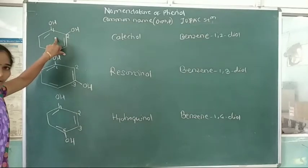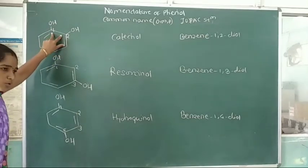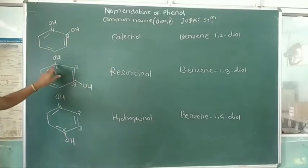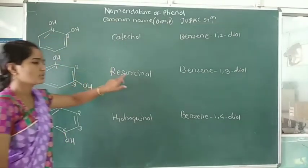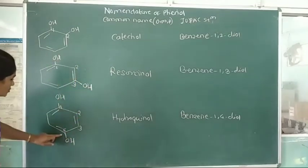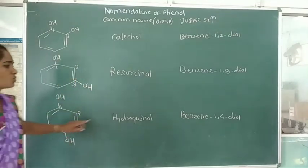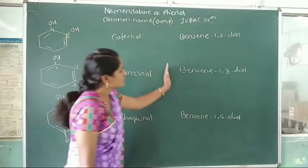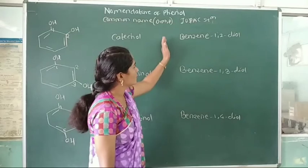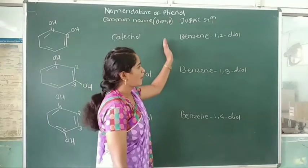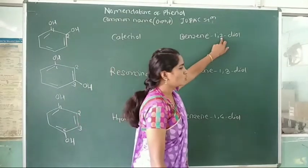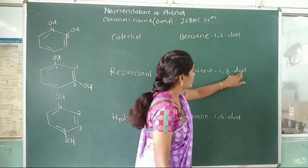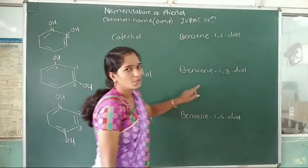These are examples of dihydric phenols. Two hydroxy groups ortho to each other — catechol. Two hydroxy groups meta to each other — resorcinol. Two hydroxy groups para to each other — hydroquinone. In the IUPAC system, write the name benzene, then use the locant numbers of the carbon atoms to which the hydroxy groups are attached, and add the suffix '-diol'.